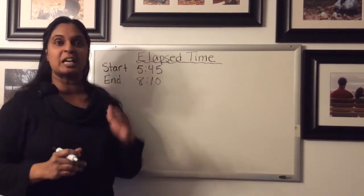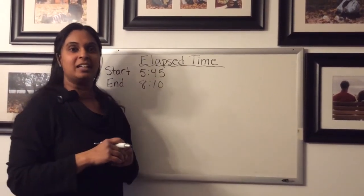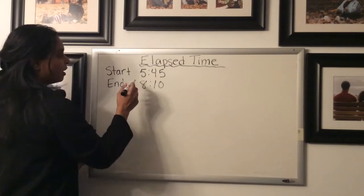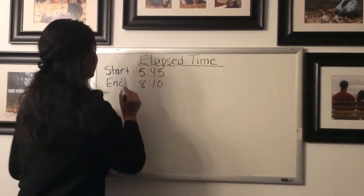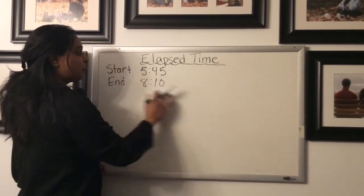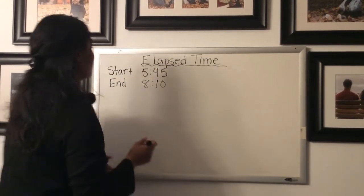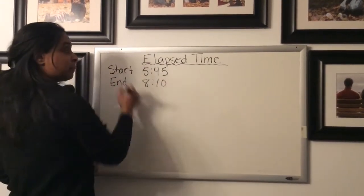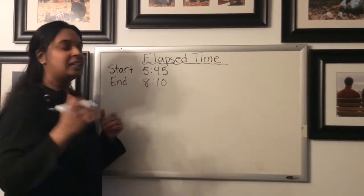Well, it means how much time has passed from start to end of an activity. So say we are out doing some shopping and we start shopping at 5:45 and we stop shopping at 8:10. So how long have we been shopping for? That's what elapsed time means. How much time has passed? How long has an activity lasted?